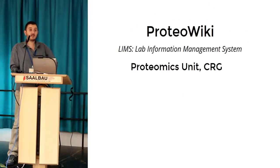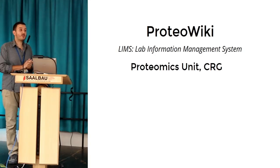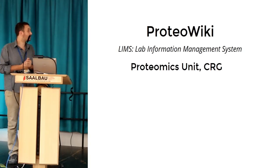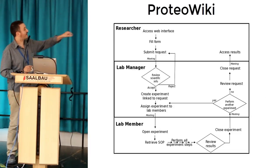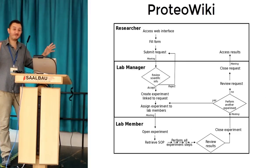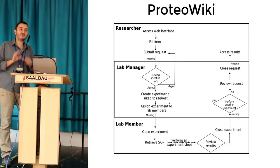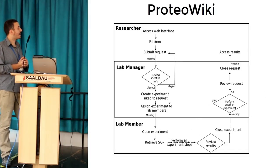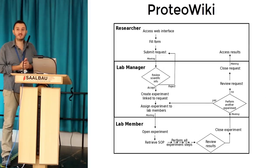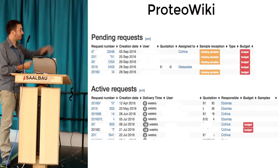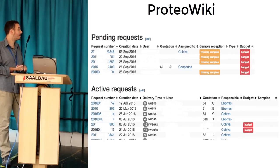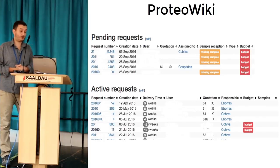One of the different cases is ProteoWiki. It's basically a kind of simple LIMS — a lab information management system. It's mostly used for handling the workflow. Basically, we have researchers that access the web interface and ask for a specific protein, tryptic digestion, whatever. Once they submit a simple form, the lab manager handles this, accepts or not, asks the user for a meeting if necessary, and then assigns tasks to the different operators.